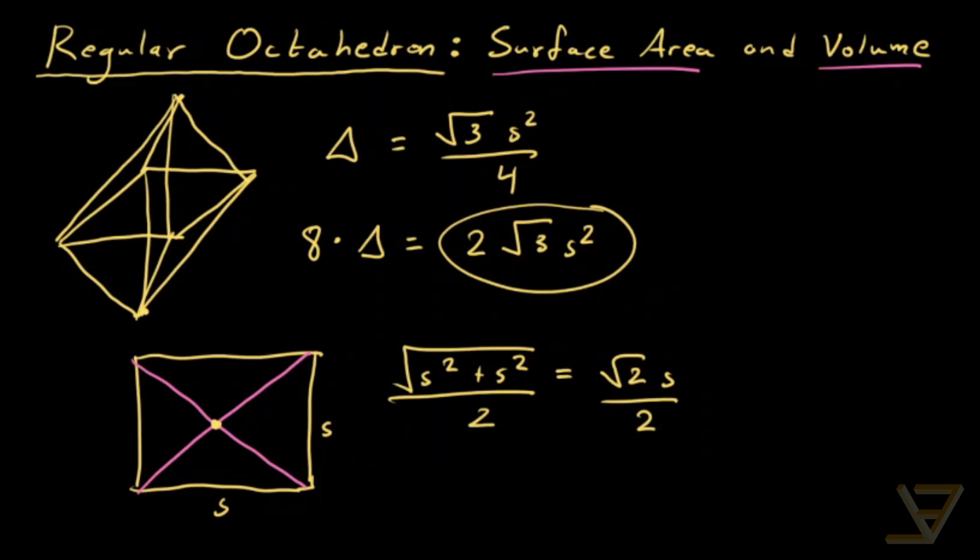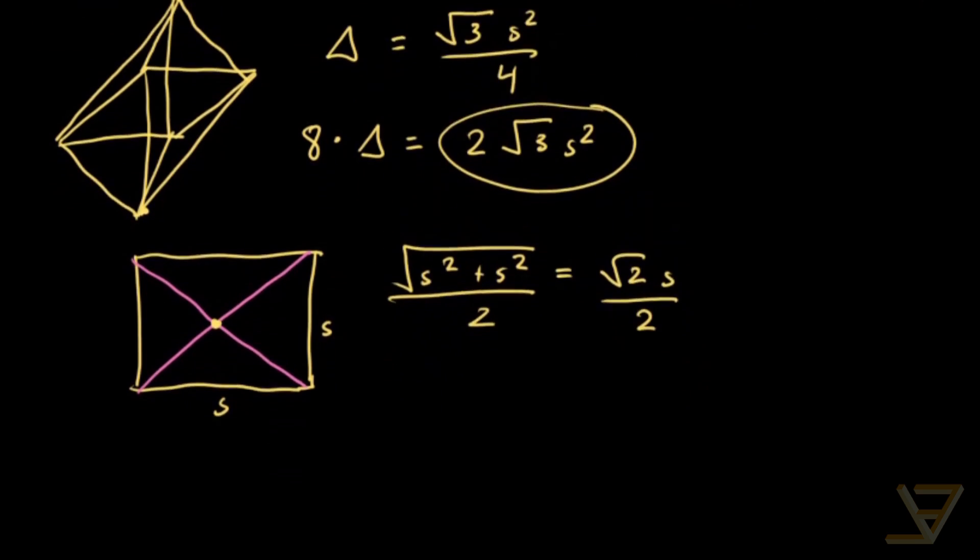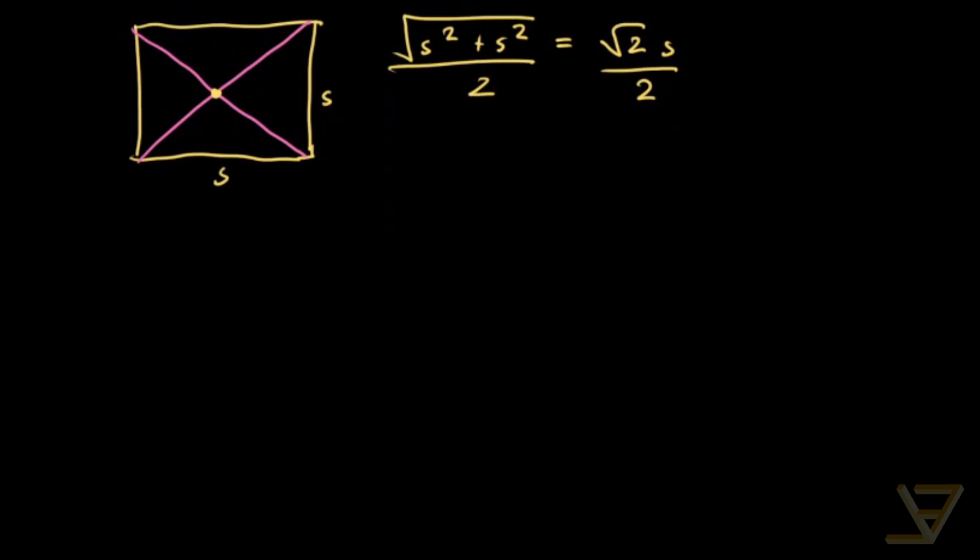And what that allows us to do is find the height of the octahedron. So let me draw out an octahedron again. We start with the square, and I'm just going to draw the first one, the one on top.